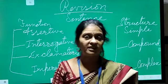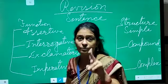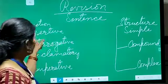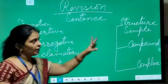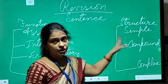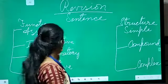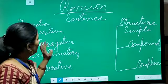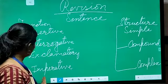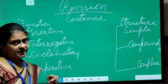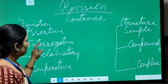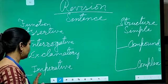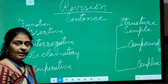Moving towards the kinds of sentences, we have two bases of classification: according to function and according to structure. According to function, there are four kinds of sentences: assertive, interrogative, exclamatory, and imperative.